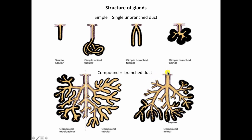Whereas in compound glands — let's look at this side first — a compound acinar gland: the duct itself branches and branches and branches, and eventually a very small duct called an intercalated duct will be surrounded by a bunch of secretory cells, in this case as an acinus. One can have compound acinar glands in which all the secretory units are acinar, compound tubular glands in which all the secretory units are tubular in shape, and a mixture — compound tubular acinar — in which you have both tubular and acinar secretory units.